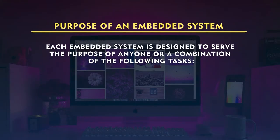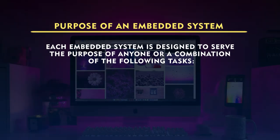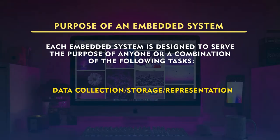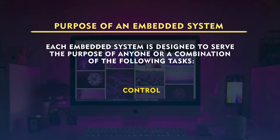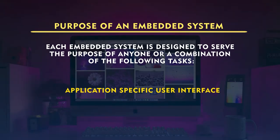Let us see where we can use the embedded system — that is, its purpose. Each embedded system is designed to serve one or a combination of the following tasks: data collection or storage, data representation, data communication, data processing, monitoring mechanisms, and controlling mechanisms. In industrial production control systems, these embedded systems control parameters and other things. Even power companies use these controlling embedded chips — whenever something abnormal happens, it triggers a security response or adjusts levels in industrial control. Application-specific user interfaces can also be provided using embedded systems.